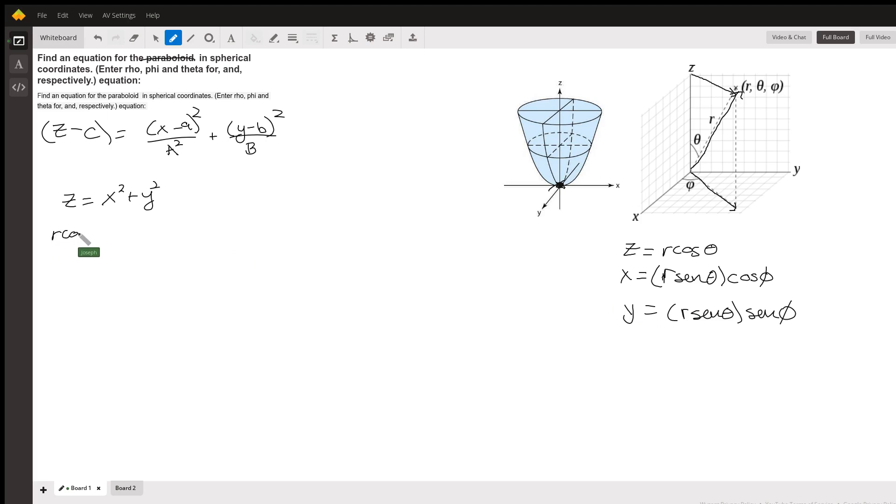So now we just need to plug it in. When we plug it in we have z equals r cosine theta, and z equals r squared sine theta cosine phi plus r squared sine theta sine phi.